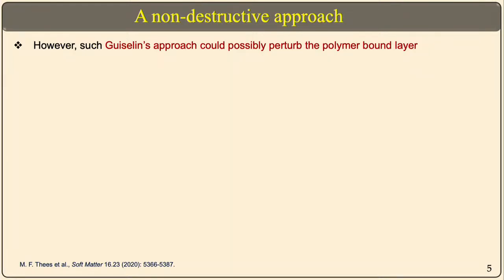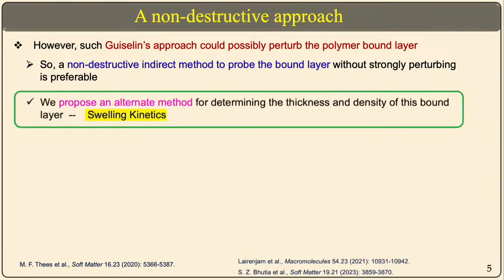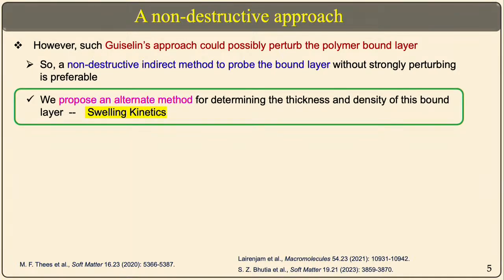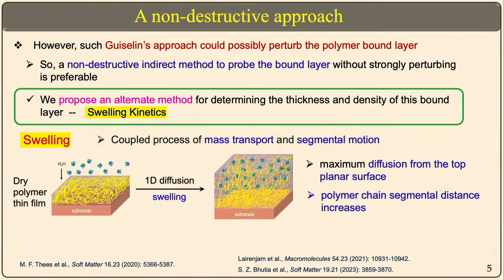What we propose here is a non-destructive and indirect method to probe this bound layer. We propose an alternate method through the swelling kinetics of this polymer film, from which we can determine both the thickness and density of this bound layer. Swelling is basically a mass transport process as well as segmental motion of polymer films. If you have a hydrophilic polymer film and bring it in the presence of water molecules, the polymer undergoes osmotic pressure and water molecules diffuse in — it is one-dimensional diffusion from the top planar surface — causing the polymer chain to expand.